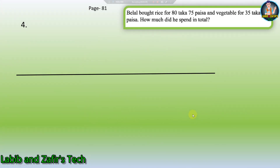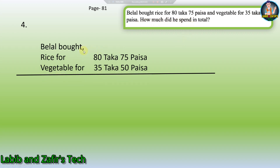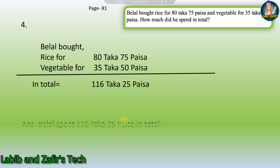Now our fourth word problem. Belal bought rice for 80 Taka 75 Persha and vegetables for 35 Taka 50 Persha. How much did he spend in total? Belal bought rice for 80 Taka 75 Persha and vegetables for 35 Taka 50 Persha. We have to add these numbers. In total, 116 Taka 25 Persha. Belal spent 116 Taka 25 Persha in total. This is our fourth word problem.